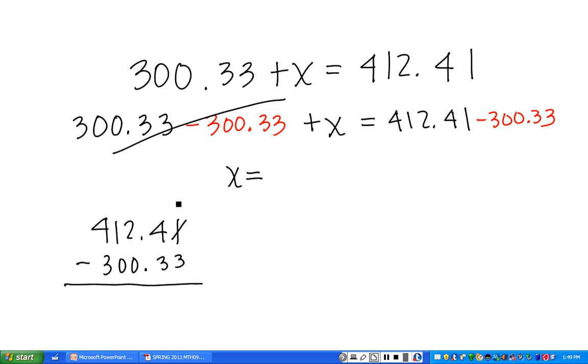That's going to be 11, we need to borrow, make that a 3. So 11 minus 3 is 8, 3 minus 3 is 0, 2 minus 0 is 2, 1 minus 0 is 1, 4 minus 3 is 1. I always recommend that you add these two numbers, make sure you get 412.41. I think we got it. So x equals 112.08, or 112 and 8 hundredths.